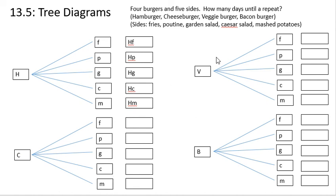The capital V is veggie burger. Then veggie burger, once again, we have the fries, poutine, garden salad, Caesar salad, and mashed potatoes. The B stands for bacon burger. And here we have, once again, fries, poutine, garden salad, Caesar salad, and mashed potatoes.